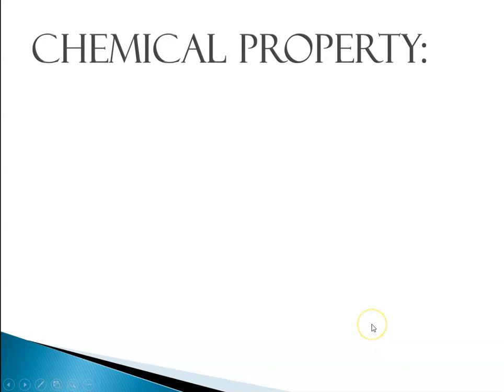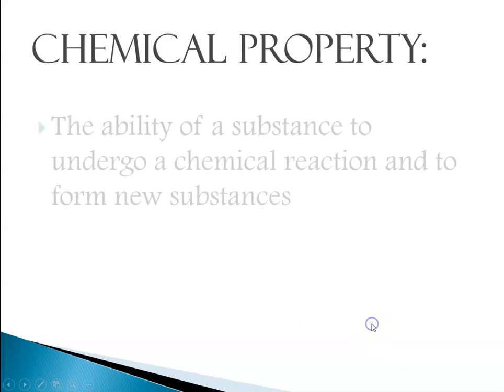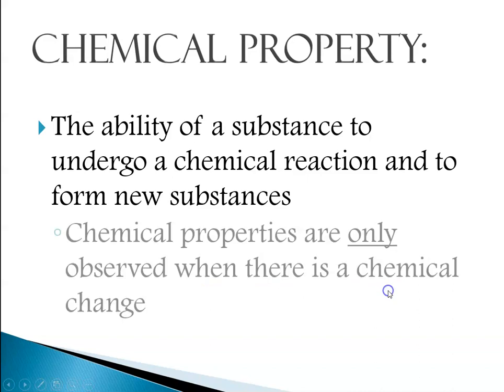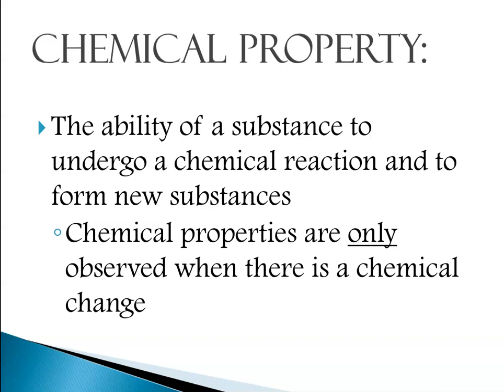That leads to the question of what is meant by a chemical property. The ability of a substance to undergo a chemical reaction and to form a new substance is a chemical property, and chemical properties are only observed when there is a chemical change. For instance, I can look at a piece of paper and wonder if it's flammable — the only way to know is to try to light it on fire. When it ignites, then I can say it's flammable. Chemical properties are observed when a chemical change is taking place.